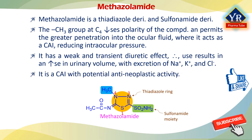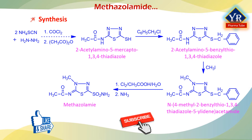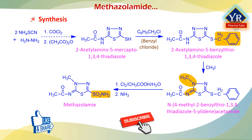Methazolamide is a carbonic anhydrase inhibitor with potential antineoplastic activity. It is synthesized from an intermediate product of acetazolamide synthesis, i.e. 2-acetylamino-5-mercapto-1,3,4-thiadiazole. This is then benzylated with benzyl chloride at the mercapto group, forming 2-acetylamino-5-benzylthio-1,3,4-thiadiazole. Further methylation with methyl iodide leads to N-(4-methyl-2-benzylthio-1,3,4-thiadiazol-5-ylidene)acetamide. Oxidation and simultaneous chlorination with chlorine in aqueous acetic acid, followed by reaction of the resulting chlorosulfonic acid derivative with ammonia, gives methazolamide.